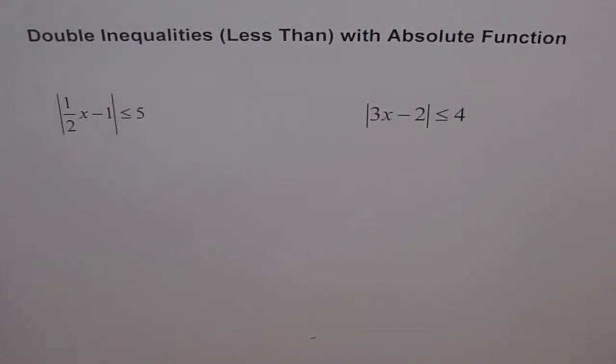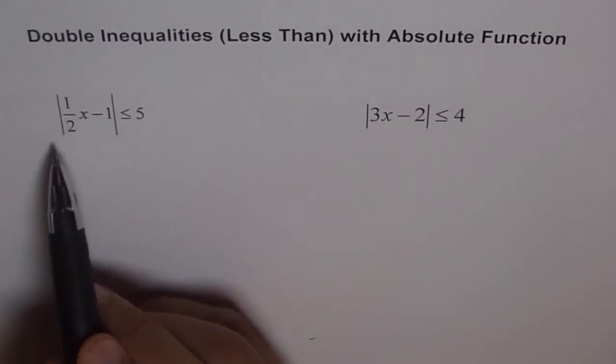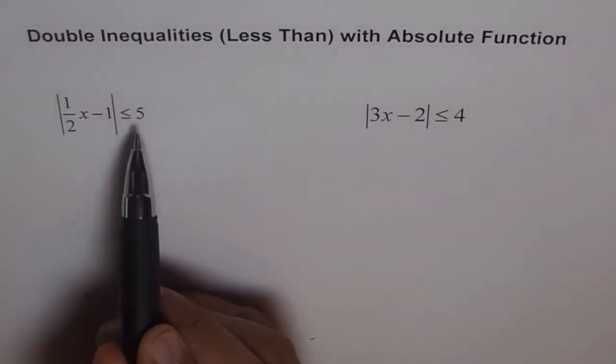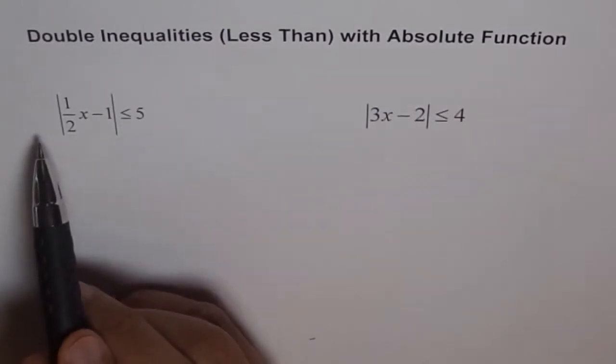Here are some more examples on inequalities with absolute functions. When we say that absolute function is less than equal to 5, then we mean that it is between 5 and minus 5.